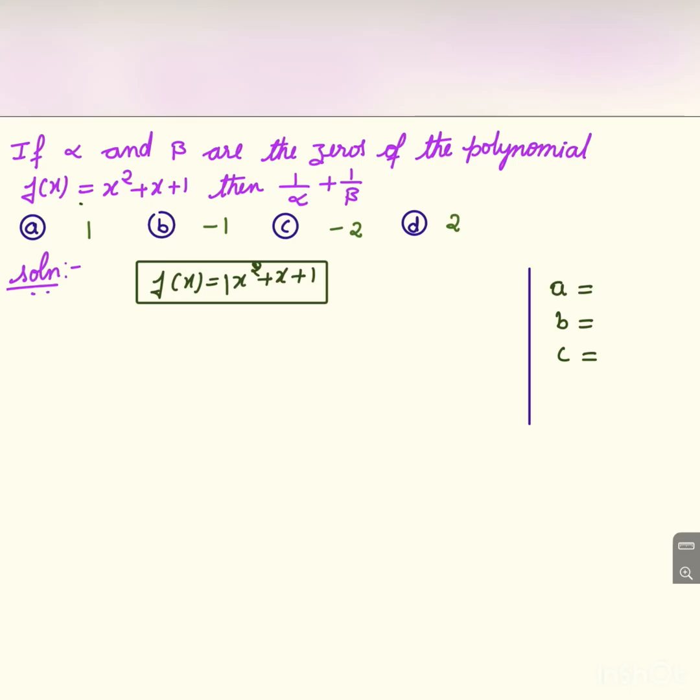Namaste everybody. Welcome to my channel. If alpha and beta are the zeros of the polynomial f(x) = x² + x + 1, then 1/α + 1/β is equal to...